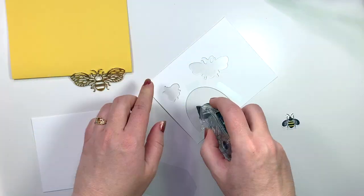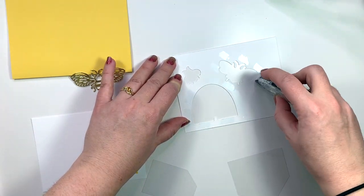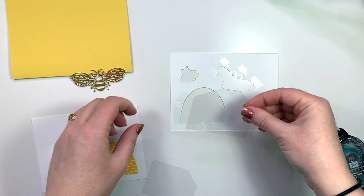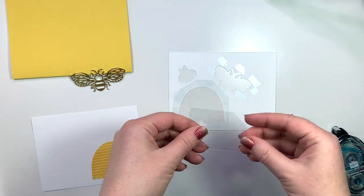I'm going to adhere that window sheet to the back of this scrap cutout piece with my snail adhesive. That's all you really need to get a good stick on this.